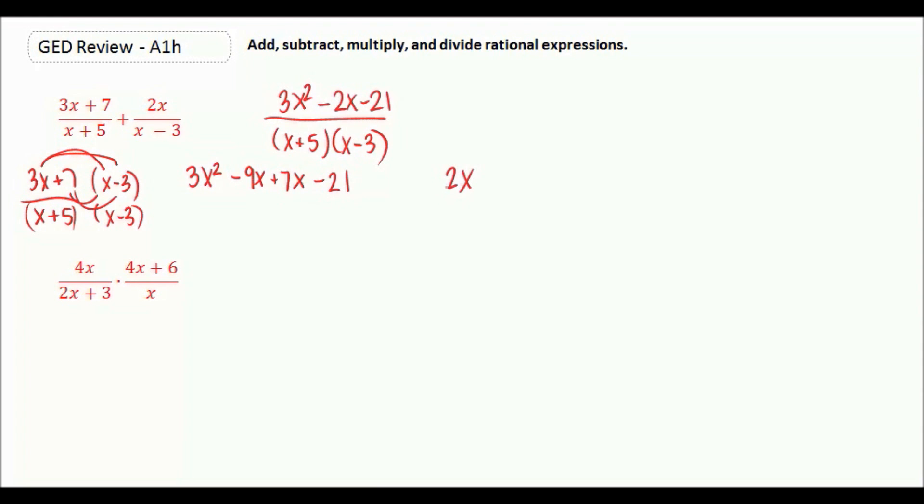Our second fraction, we would need to multiply it by x plus 5, which means we need to multiply the numerator by x plus 5. We get 2x squared, and 2x times 5 is 10x.